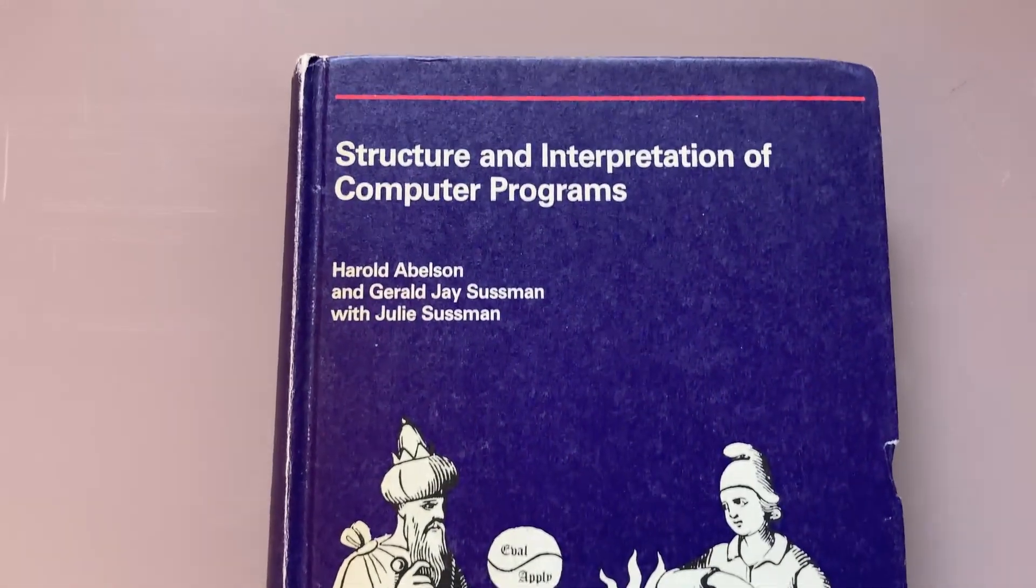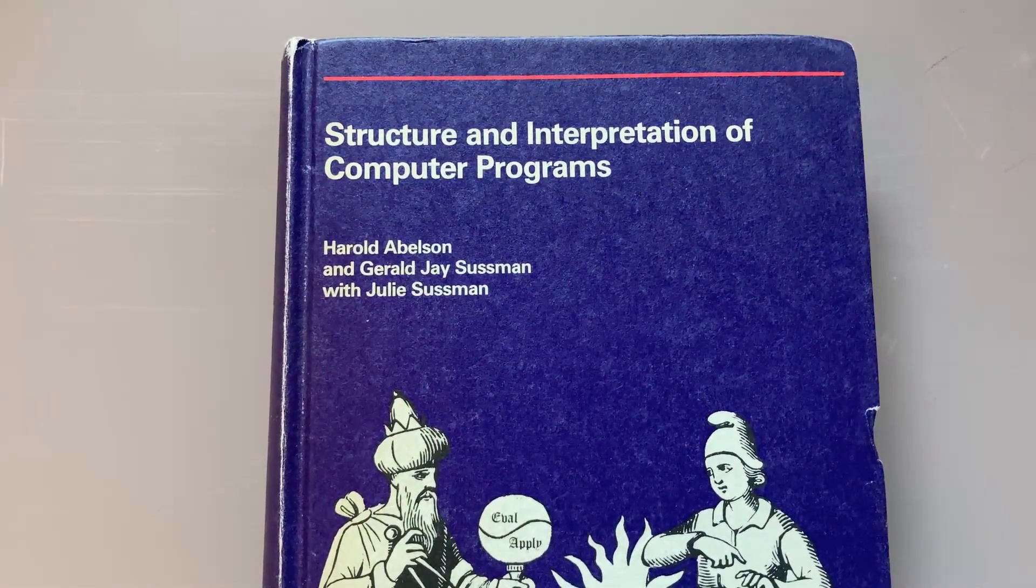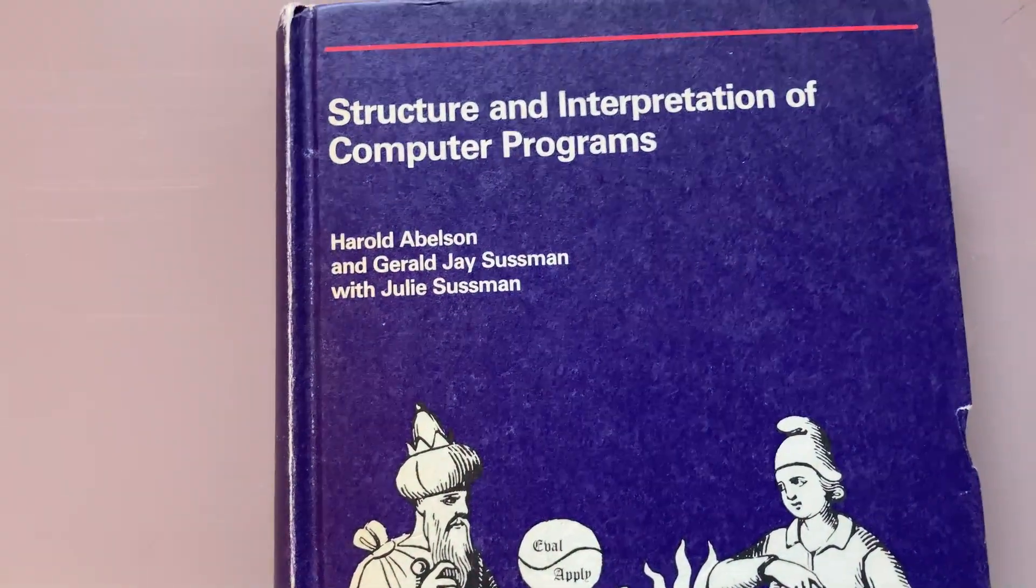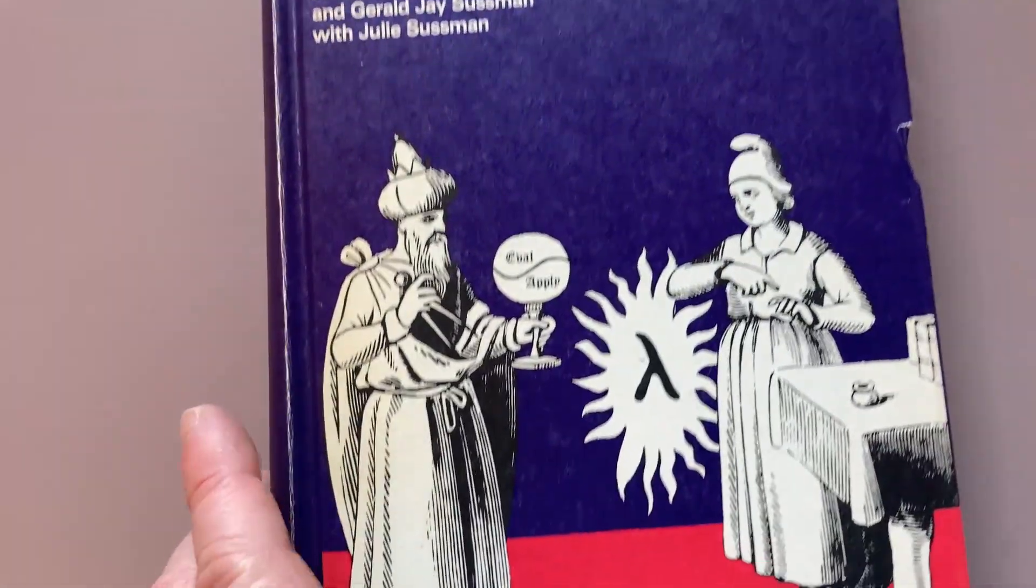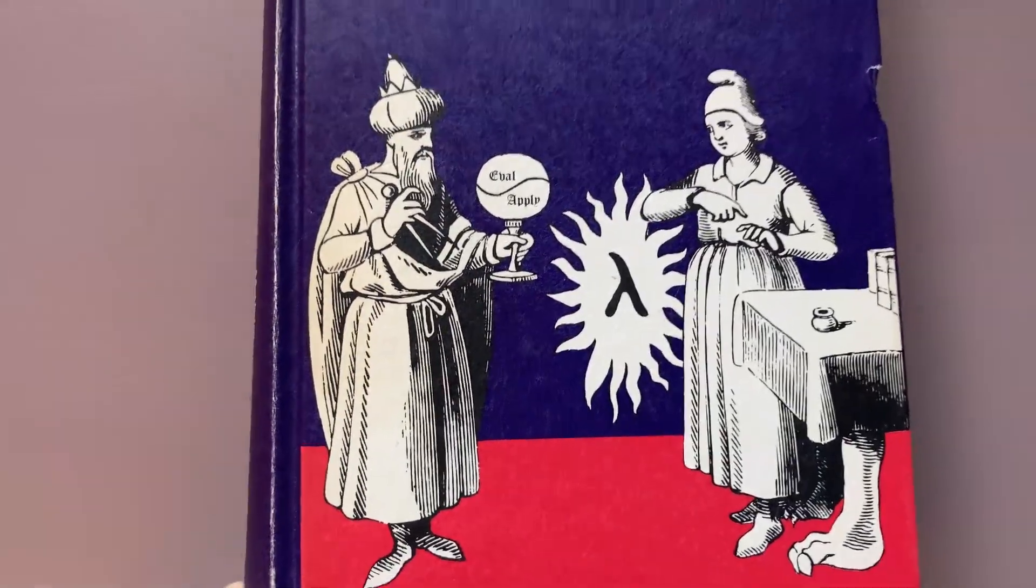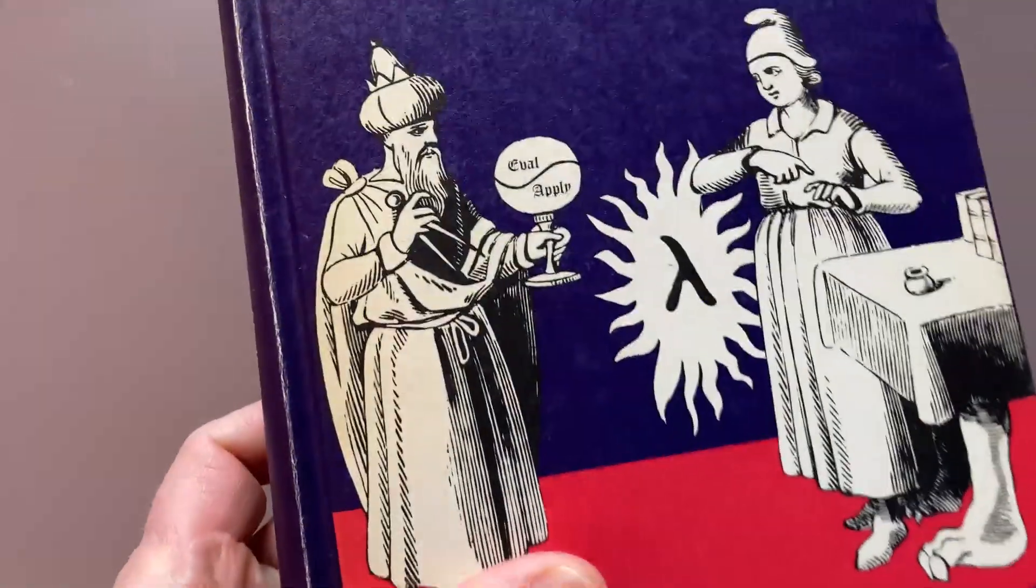It's called Structure and Interpretation of Computer Programs and it was written by Harold Abelson and Gerald J. Sussman with Julie Sussman. You can see why it's called Wizard Book because it has a picture of a wizard on the cover, or maybe it's a sorcerer.